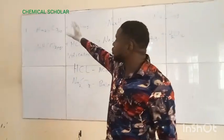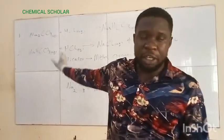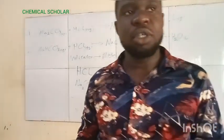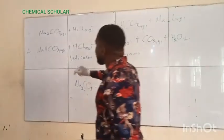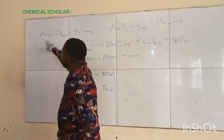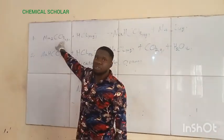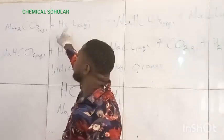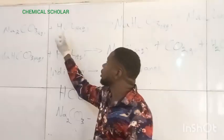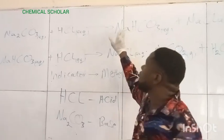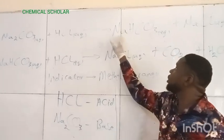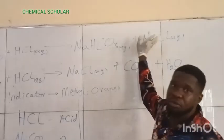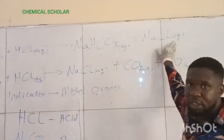So here we have the equations of the reactions. The reaction is in two stages. First, when you react sodium carbonate solution with hydrochloric acid solution, it will give you sodium hydrogen carbonate and it will also give you sodium chloride.